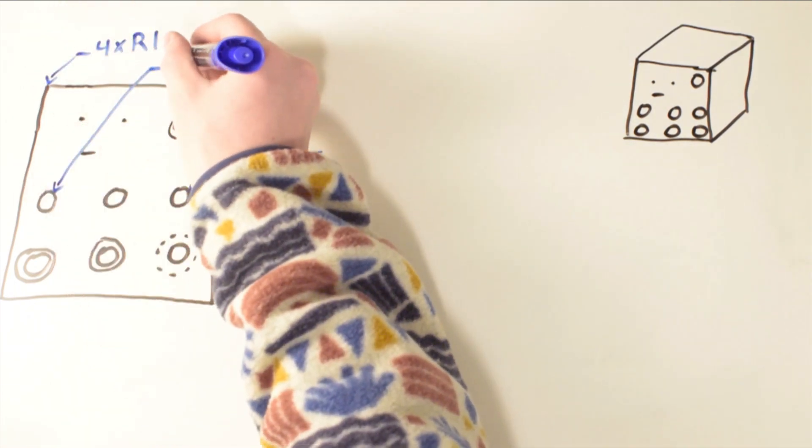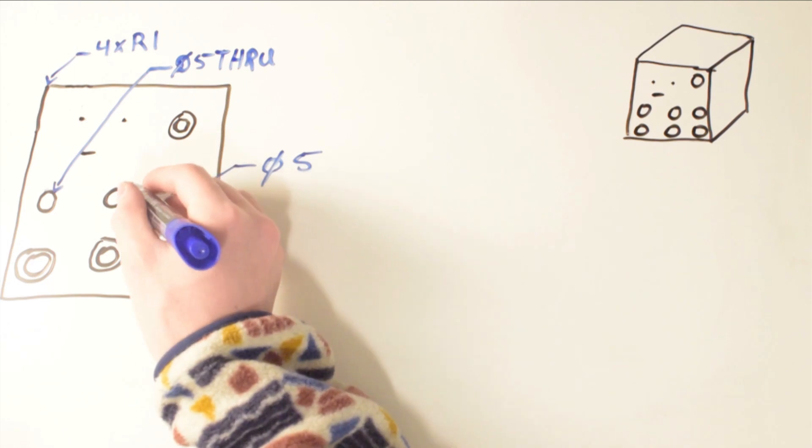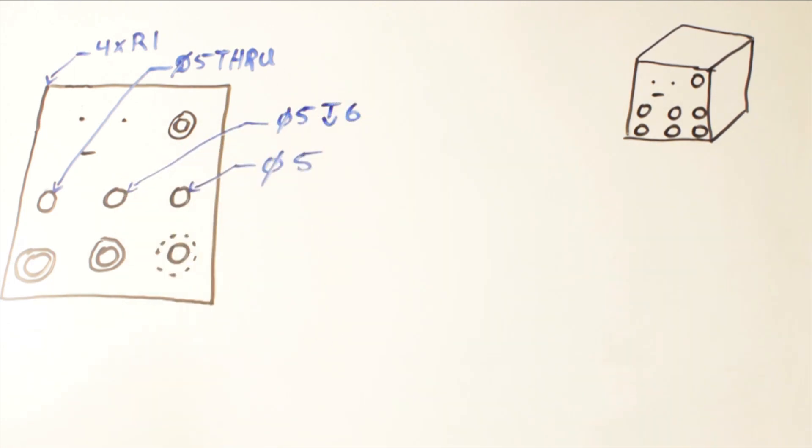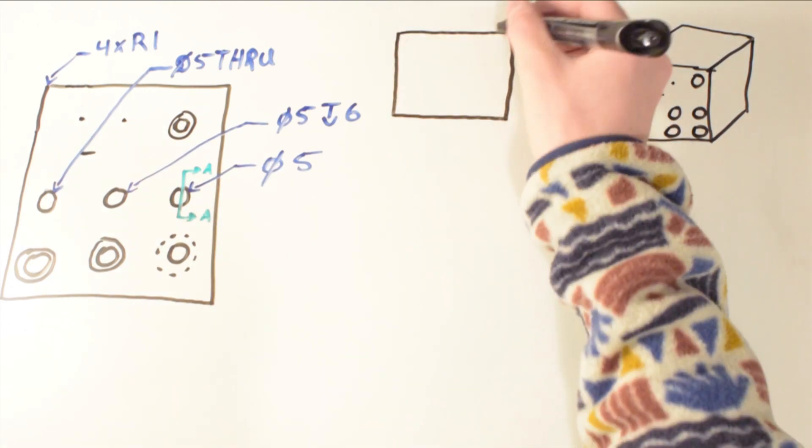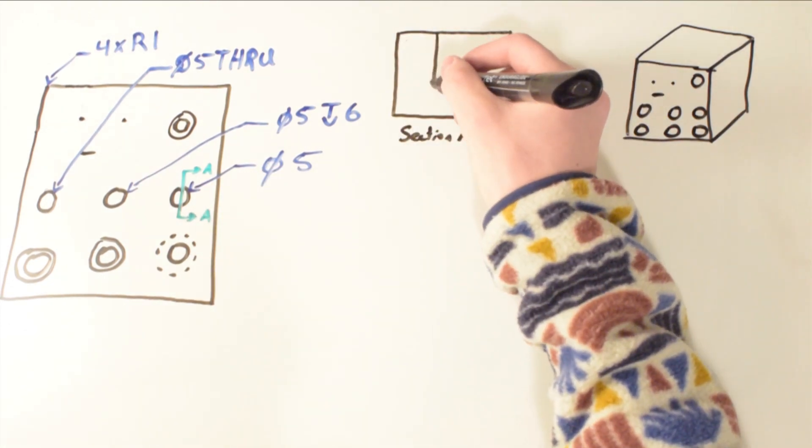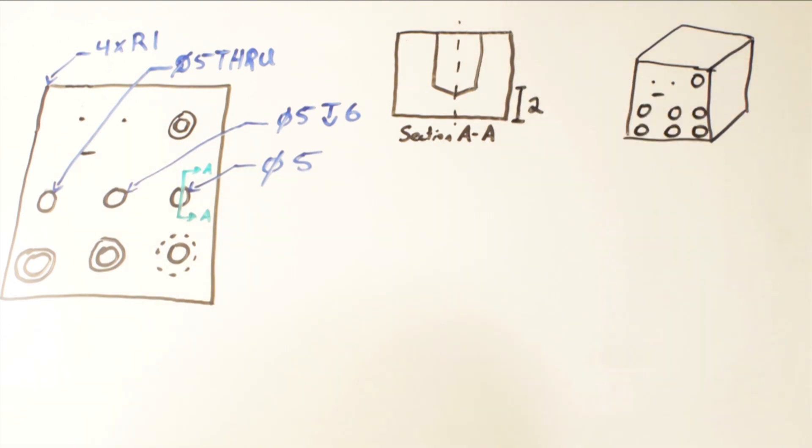Beside a diameter there are a few symbols you may see. For a through hole you will see the letters THRU. For a blind hole you will typically see a depth symbol followed by the distance that the hole must go from the top surface. If nothing is specified, you may need to go to a section view as the distance from the opposite surface may be more important.